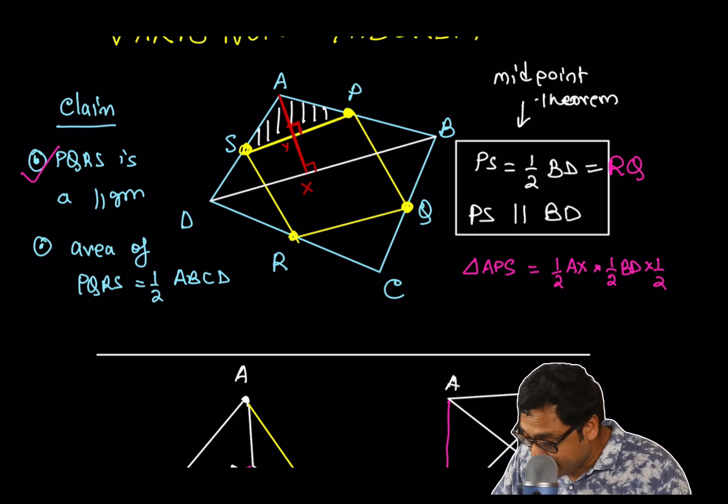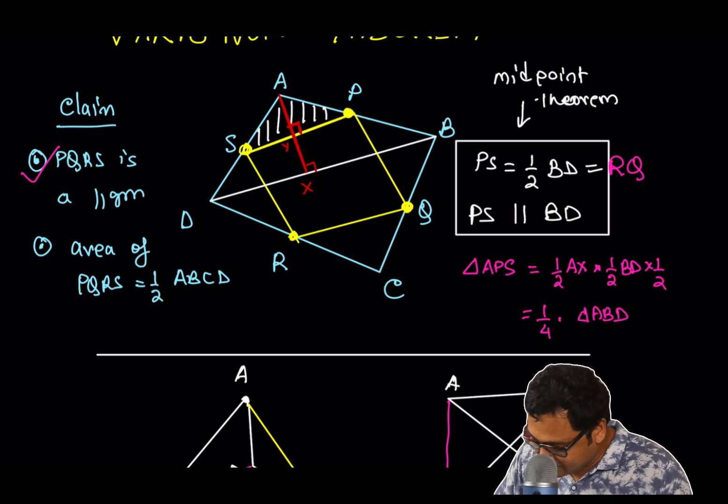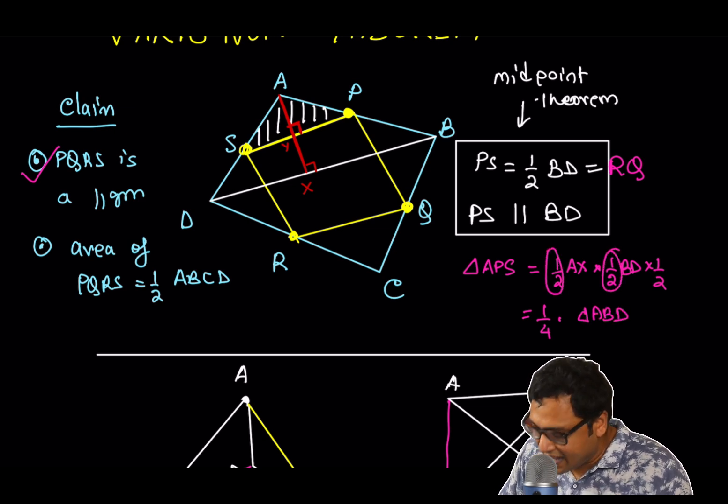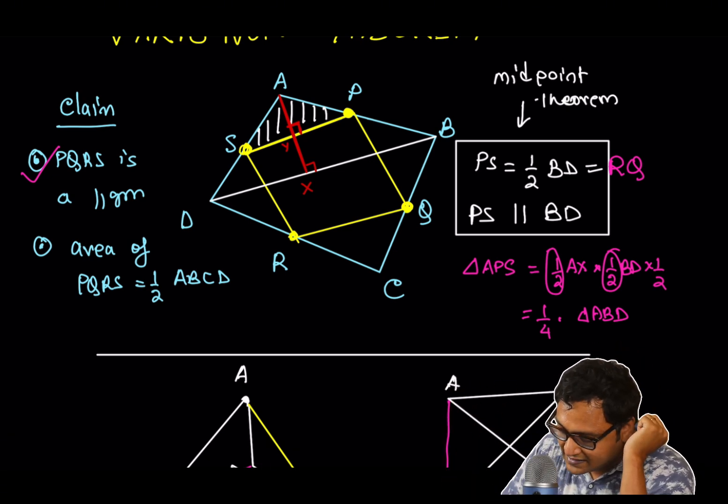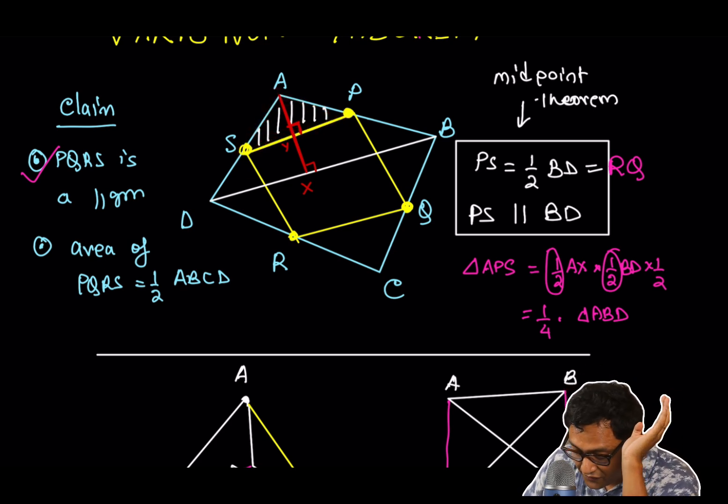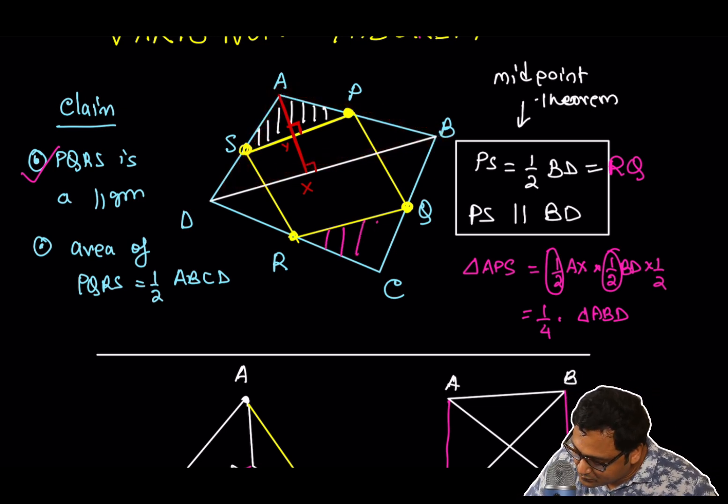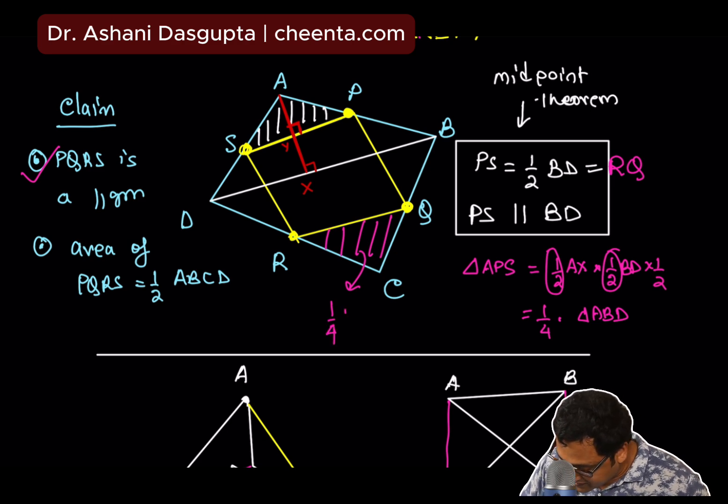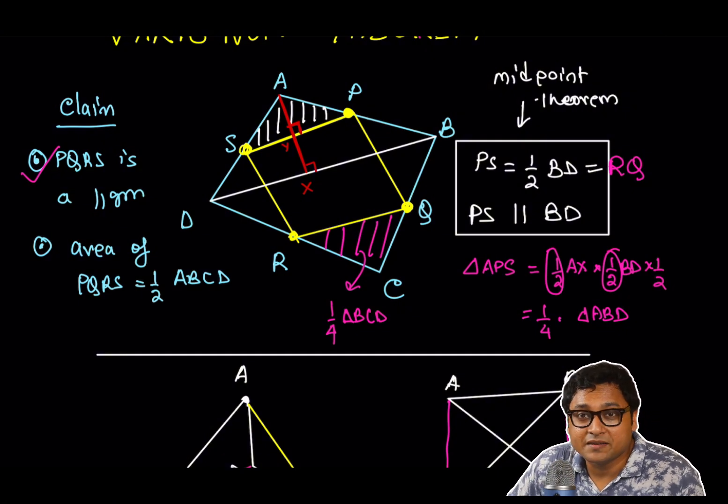That means, area of triangle APS is one-fourth of the area of triangle ABD. Let's multiply half and half and then half times AX times BD is the area of triangle ABD. So, this little piece is one-fourth the area of triangle ABD. Similarly, this little piece will be one-fourth the area of triangle BCD, and this will almost complete the proof.